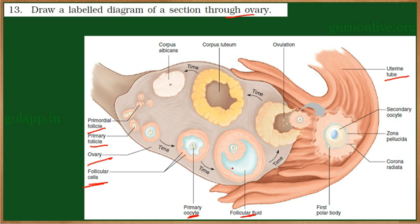When the concentration of luteinizing hormone increases, once the mature follicle is formed, the follicle ruptures, releasing the oocyte. This stage is called the secondary oocyte. Only the secondary oocyte enters the uterine tube, while the remaining part of the follicle stays inside the ovary. It gets converted into corpus luteum and then into corpus albicans.